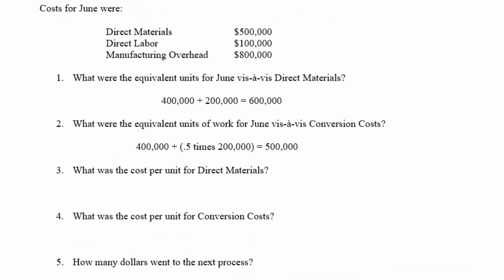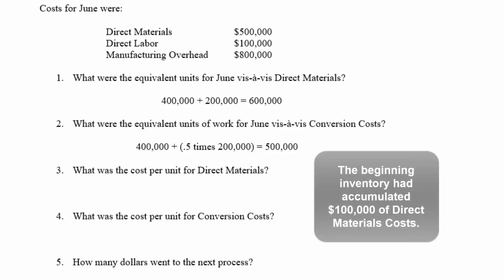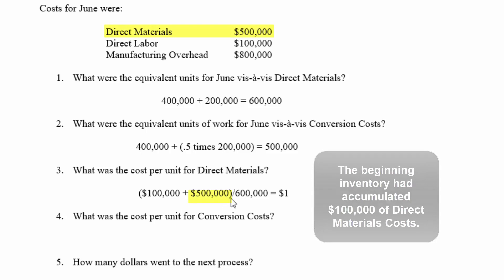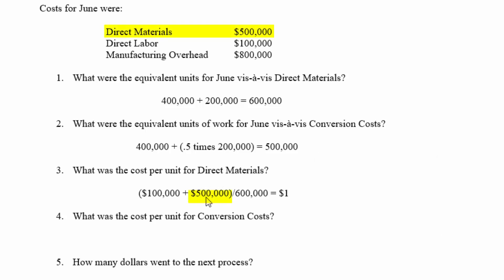Next, the problem wants to know the cost per unit for direct materials. We take last month's beginning inventory, add it to this month's work, and divide by the equivalent units of work we did. The costs from last month were $100,000; the new costs added for materials were $500,000. So $600,000 divided by 600,000 equivalent units means our cost per unit for direct materials is $1.00.